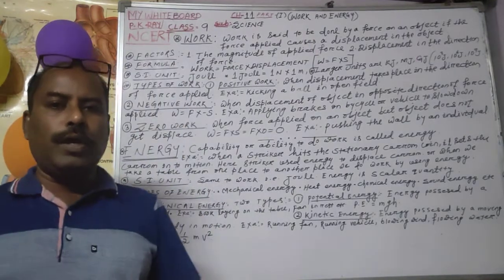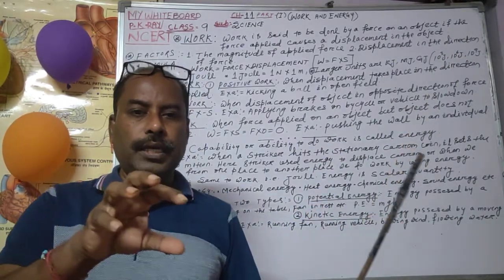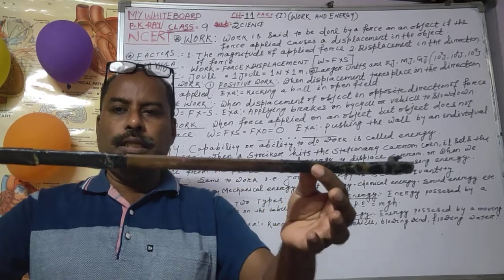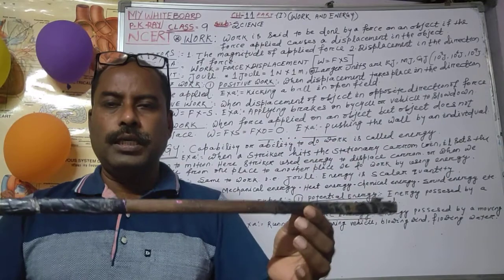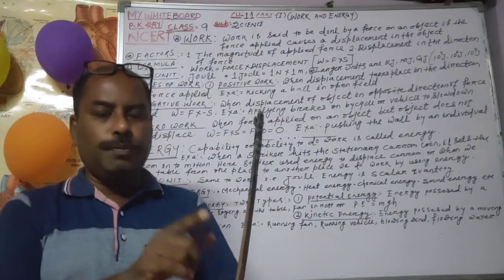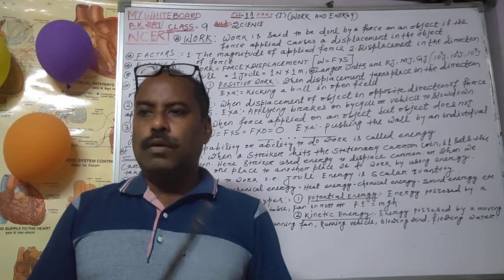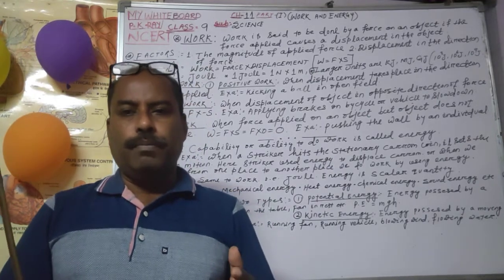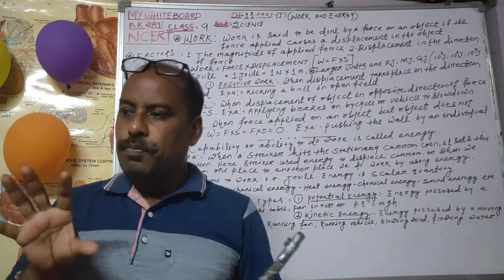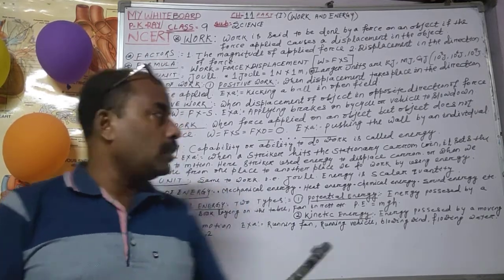Positive work means W equals F into S. We apply force and the object goes for displacement in the direction of the force. For example, this is a stick — when I give force in the forward direction and the stick goes in the forward direction, then we call this positive work. That means the force direction and the displacement direction are in the same direction. For example, when we pedal the bicycle, the cycle goes in the forward direction and we pedal in the forward direction — that is positive work. When we open the door, we push the door in the forward direction and the door opens in the forward direction — that is positive work.